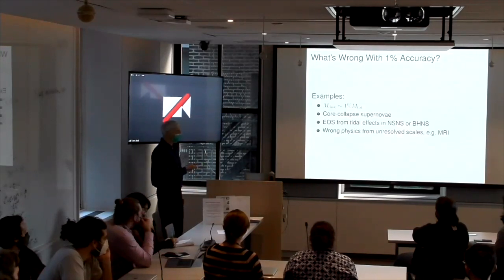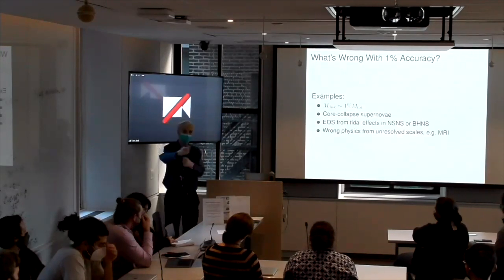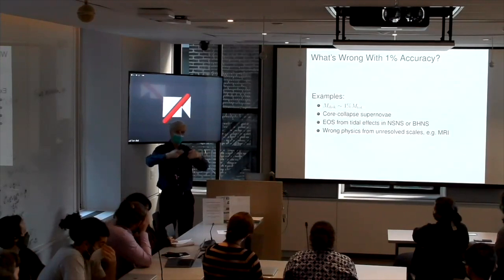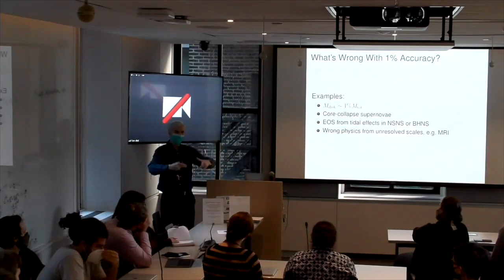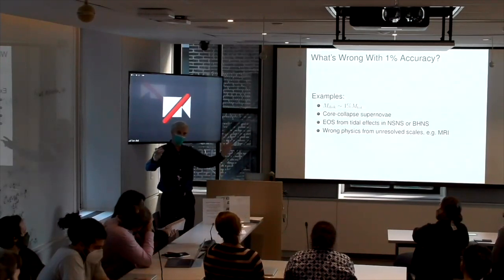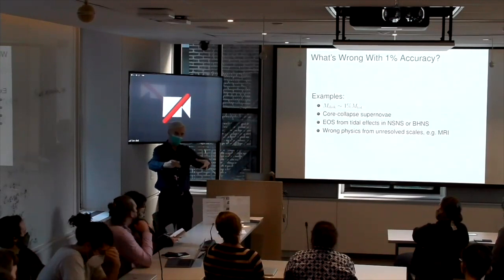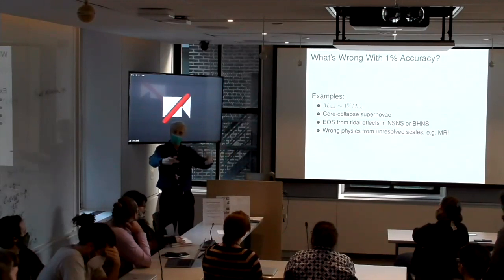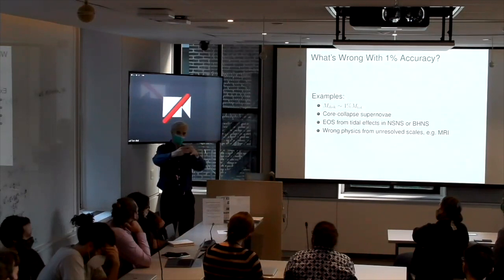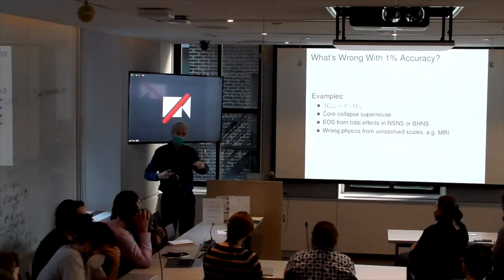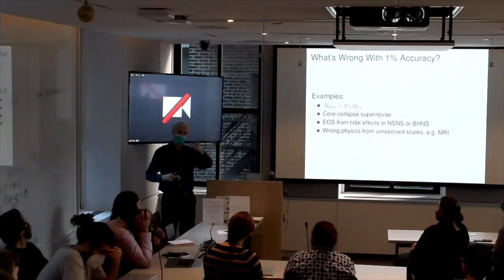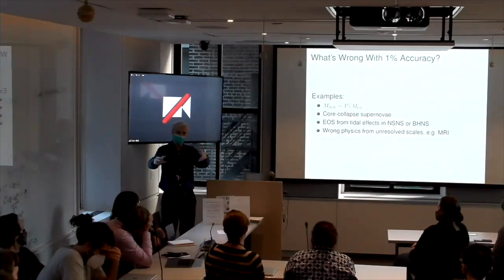Well, there are many examples. For example, two neutron stars collide. They eject some matter. The matter is what produces the gamma ray burst and the kilonova and all these other things. But that matter is just roughly a percent or so of the total mass that you sent in. So if you have a 1% error in your calculation, you have a 100% error in the properties of the ejecta.